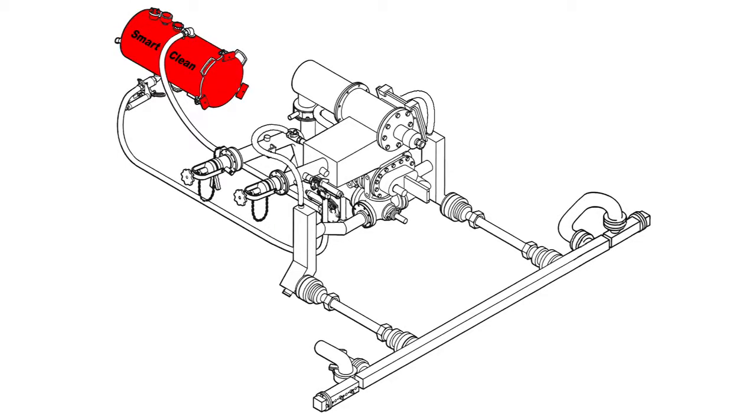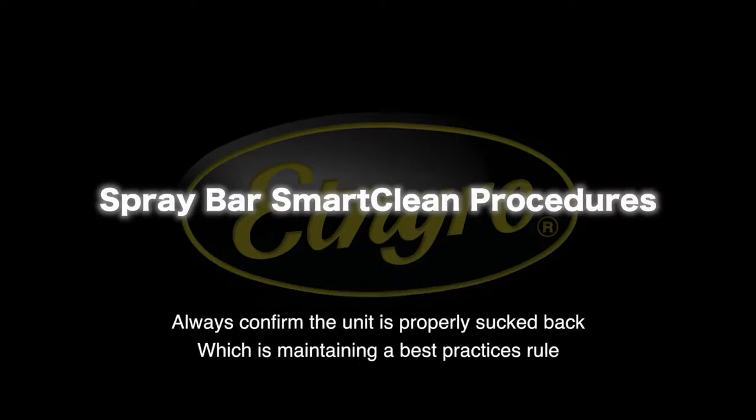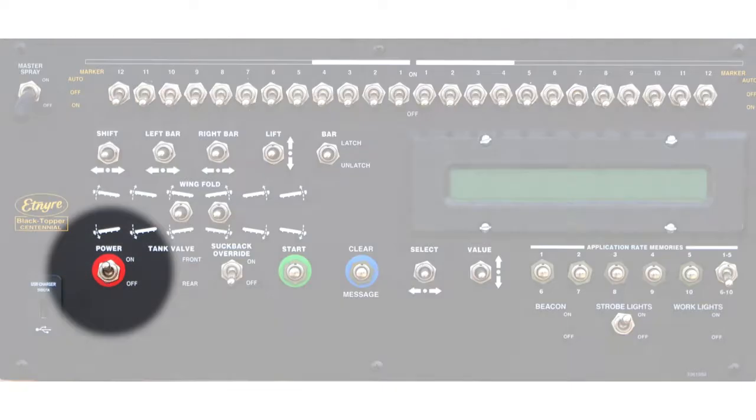SmartClean is provided as an additional operation to standard suck back procedures, which normally removes sufficient material from the circulating system. If however SmartClean is desired after suck back, flushing solvent must be in the SmartClean tank for the procedure. Turn the power switch on at the cab control panel.